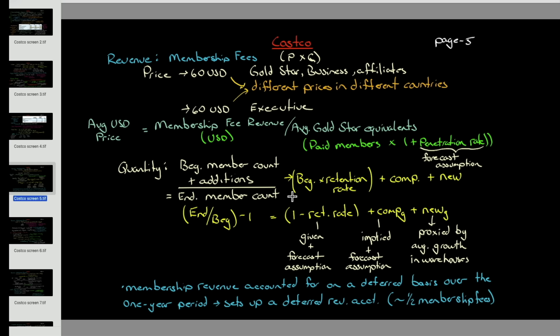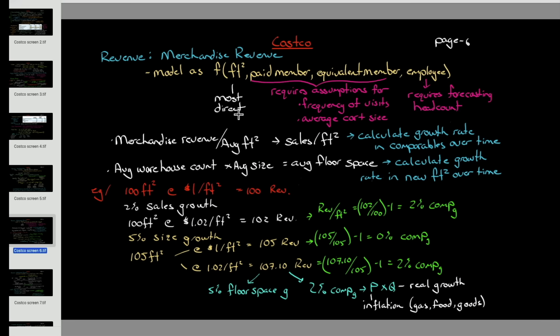We don't want to just take a growth rate and say the five-year growth rate is this, let's forecast that into the future. You've got a growth rate — but what's driving that growth rate? If there are three or four variables driving it, you want to decompose it into as many of those variables as possible so you can see the effect of each one. So we'll be looking at ways of forecasting membership fees and merchandise revenue.